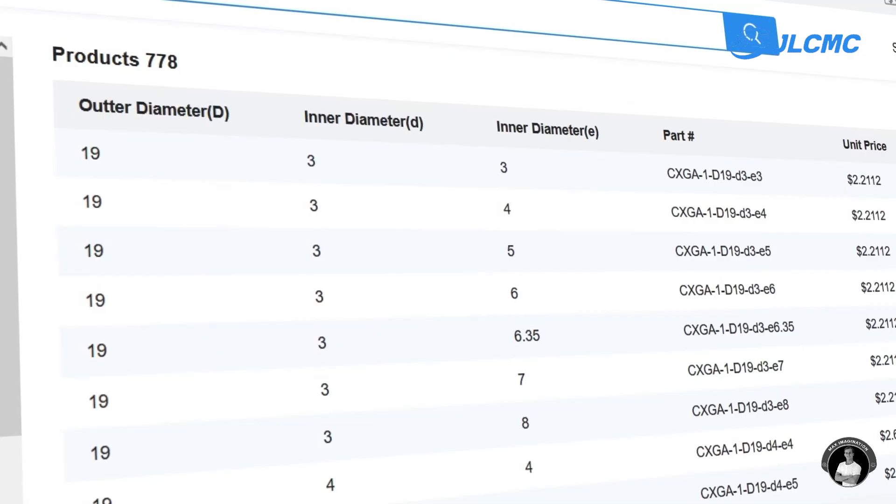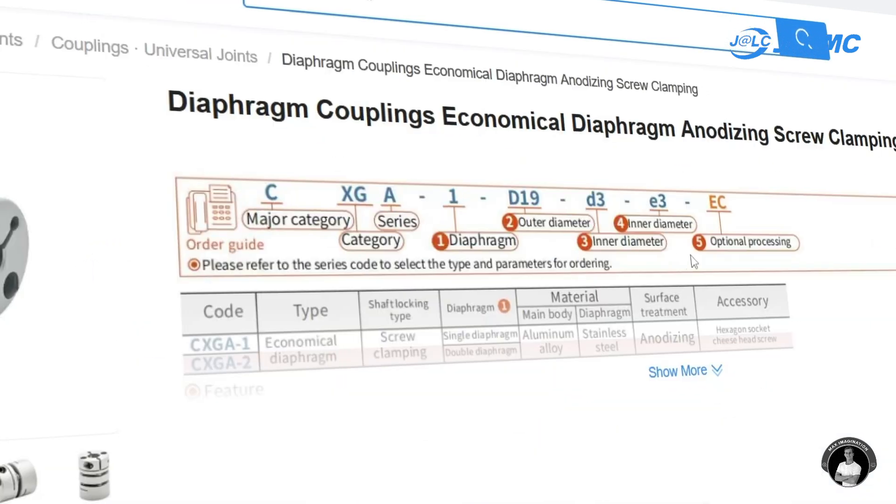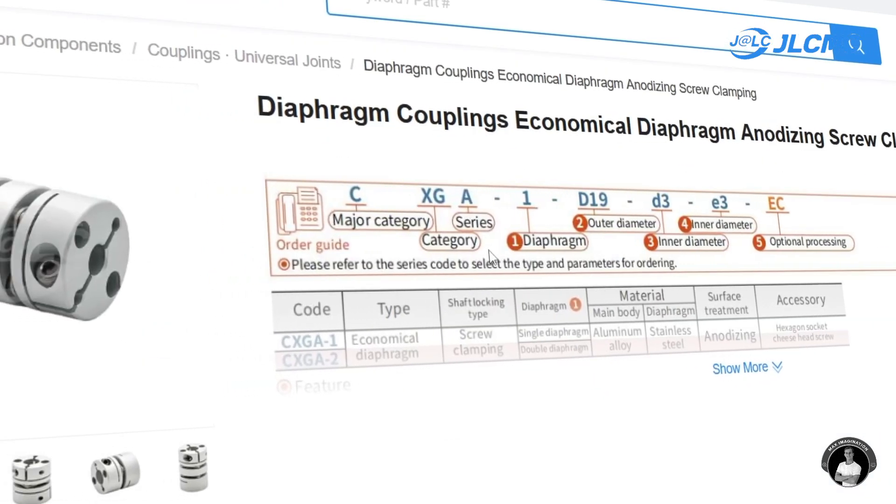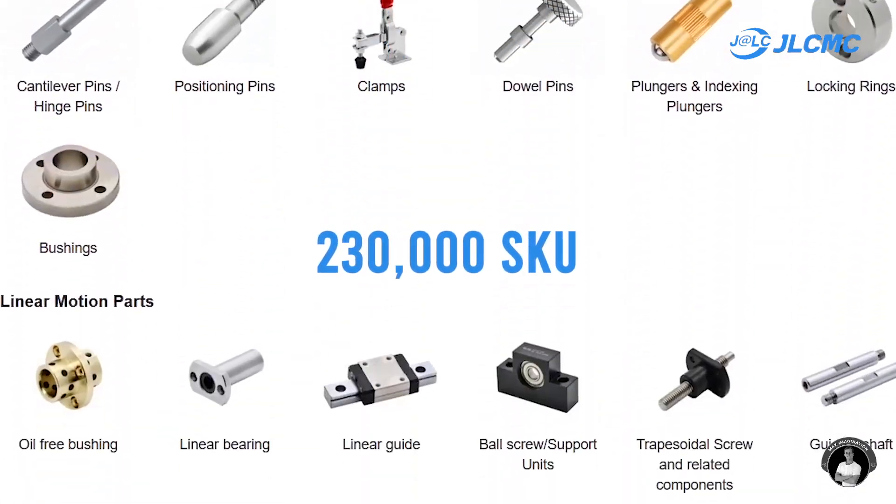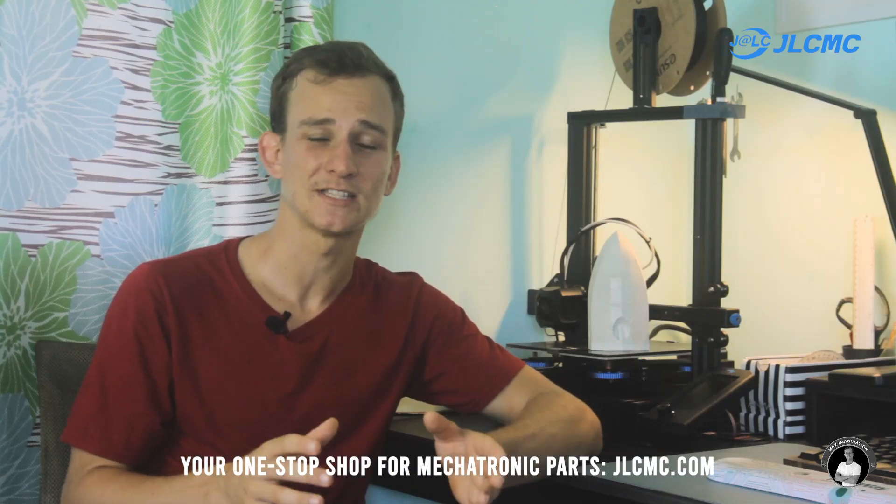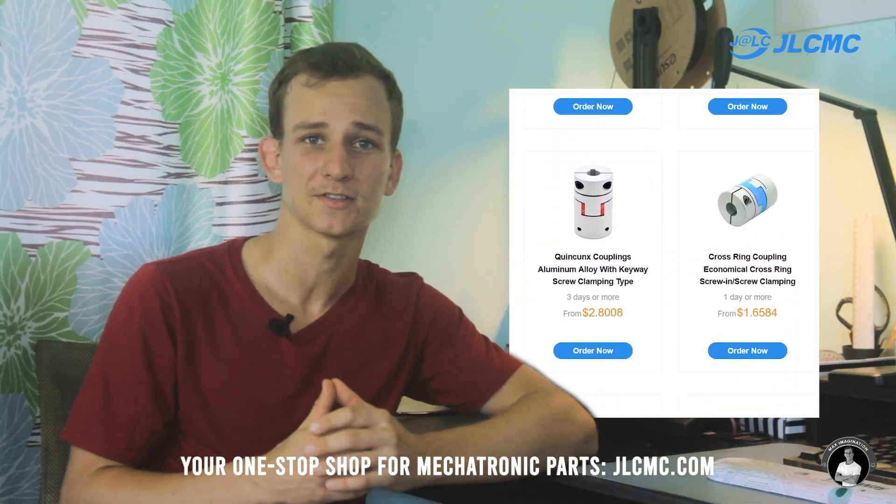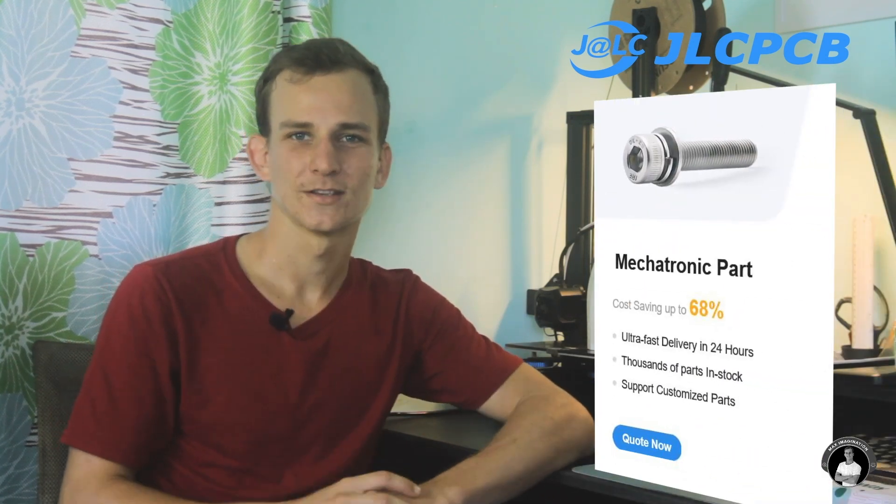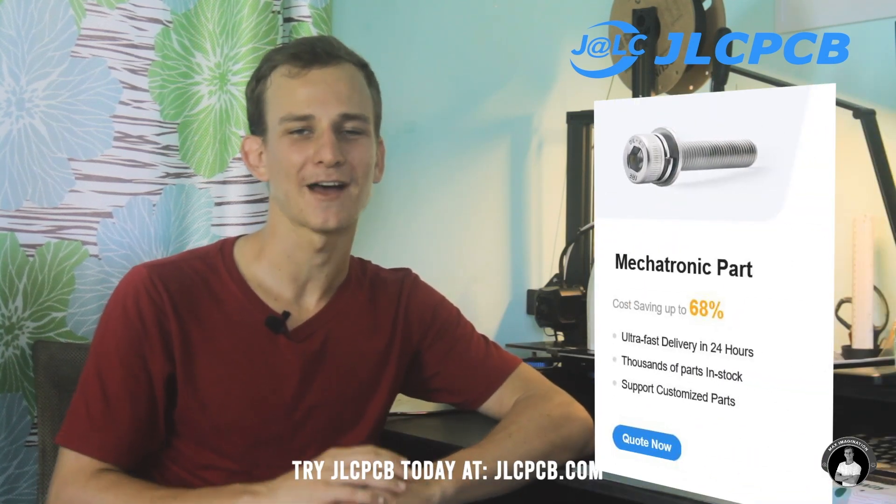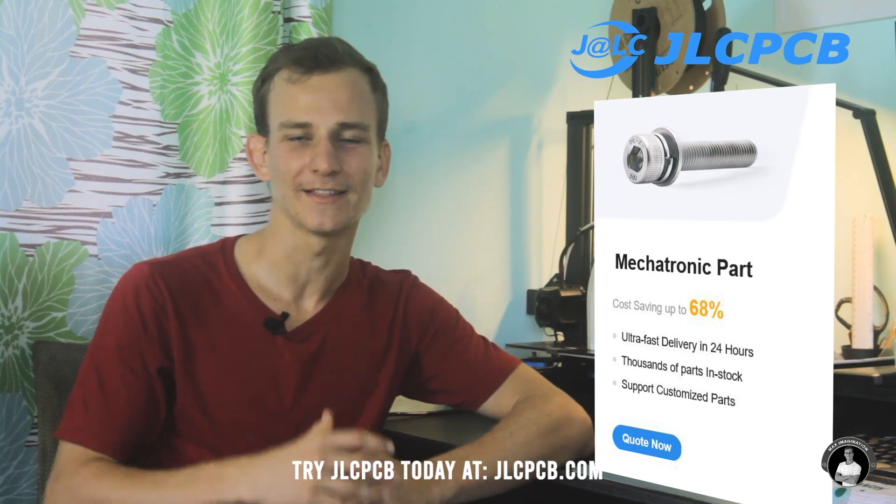Why choose JLCMC? Because you get the benefit of being able to select very specific parameters of each and every part, enjoy swift delivery in days, low wholesale prices even when purchasing in small quantities. Nothing beats that. With a stock of over 230,000 parts and counting, JLCMC simplifies search and comparison saving you time. JLCPCB offers you engineers and DIY makers a comprehensive solution to your PCBs, 3D printing, CNC machining, and mechatronics needs. Streamline your projects by trying out JLCPCB through clicking the link in the description.